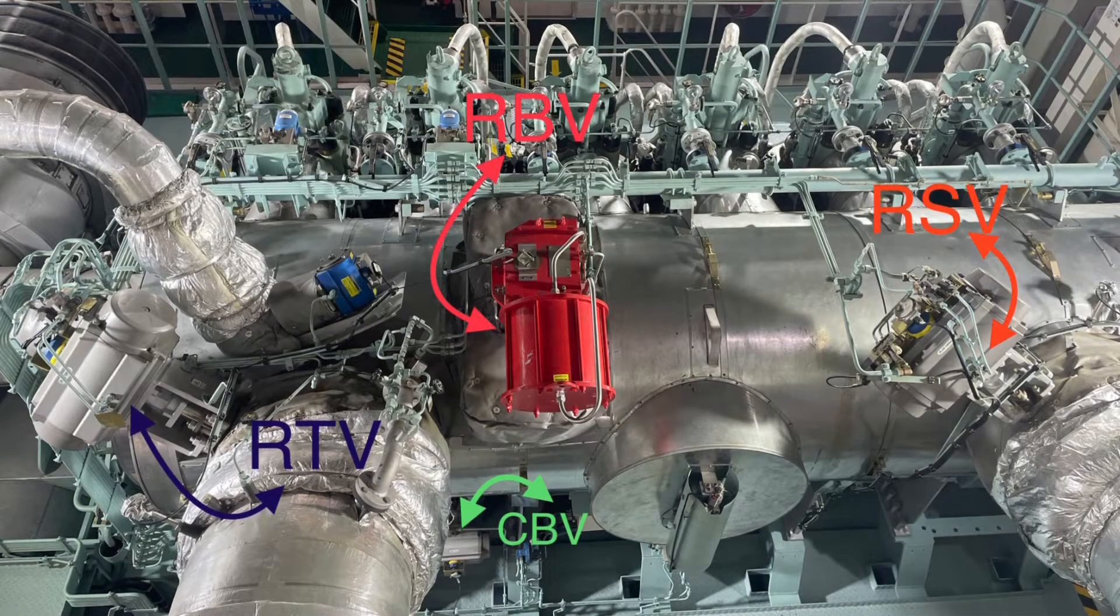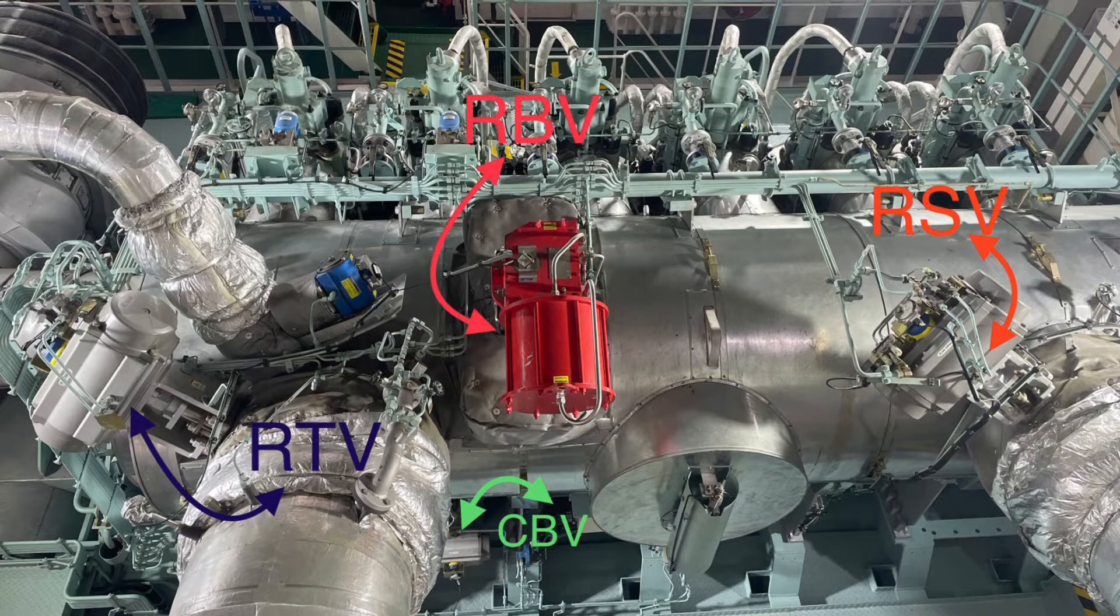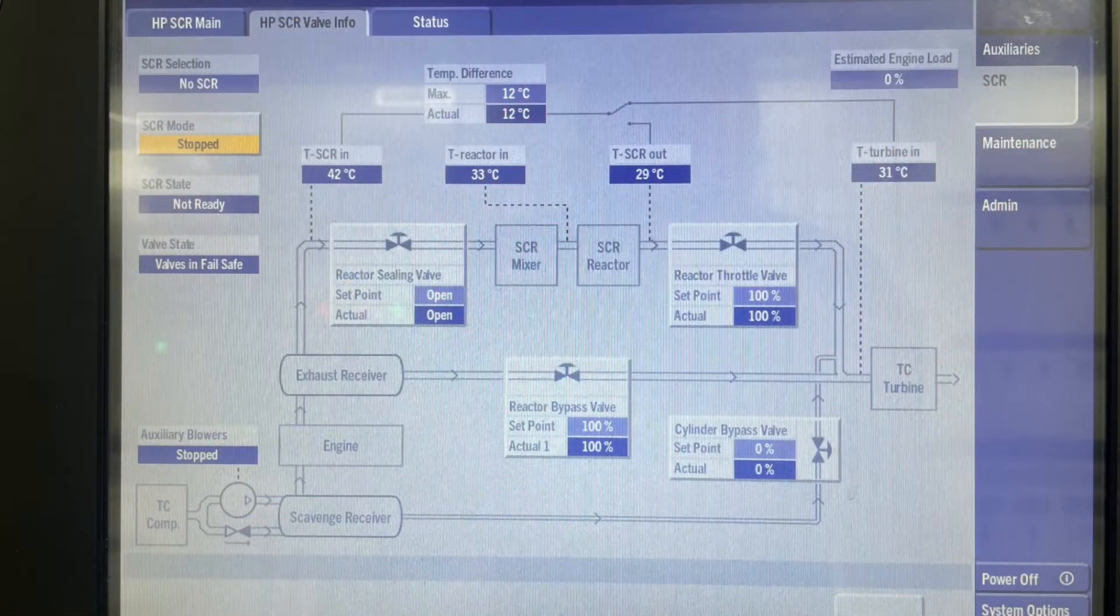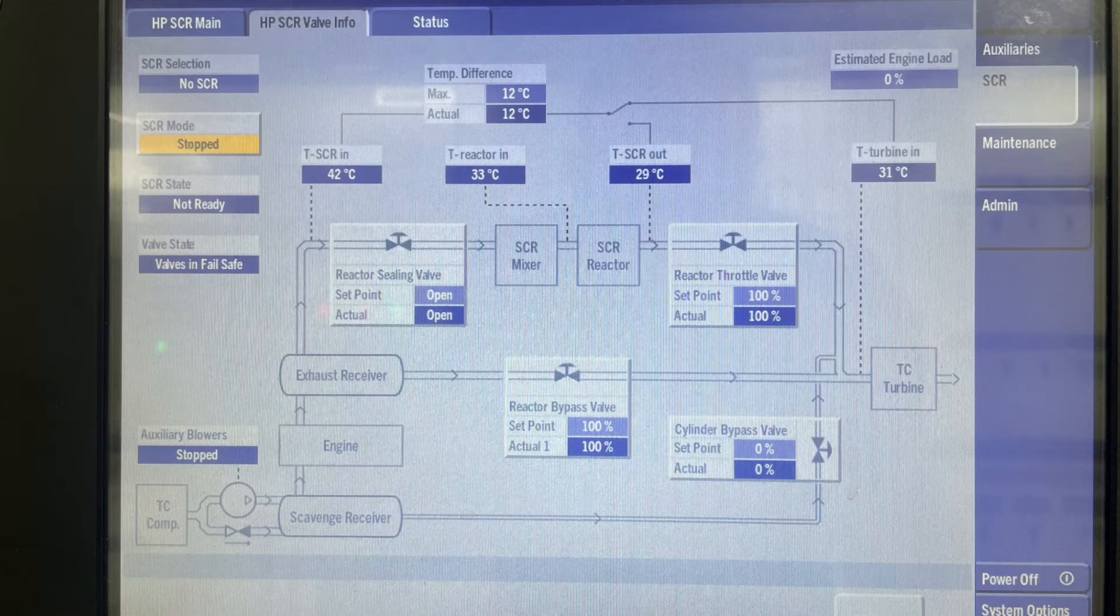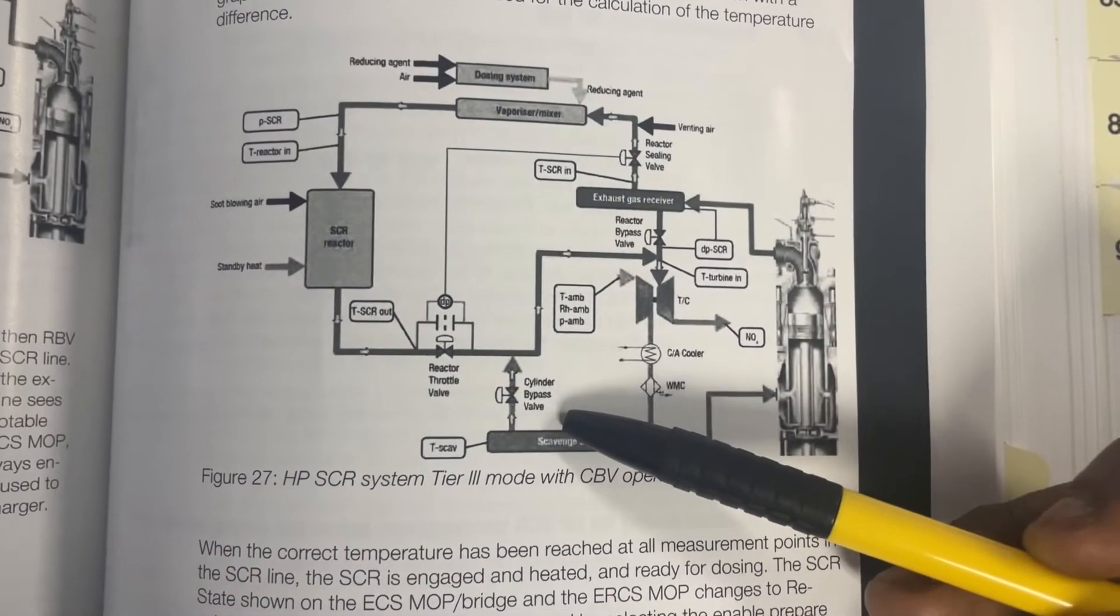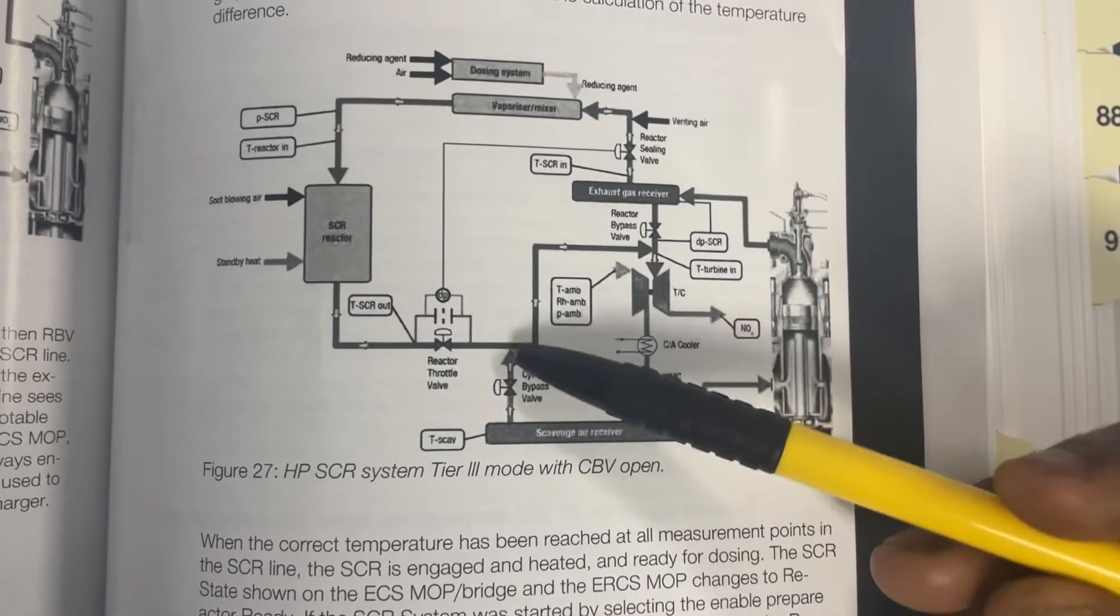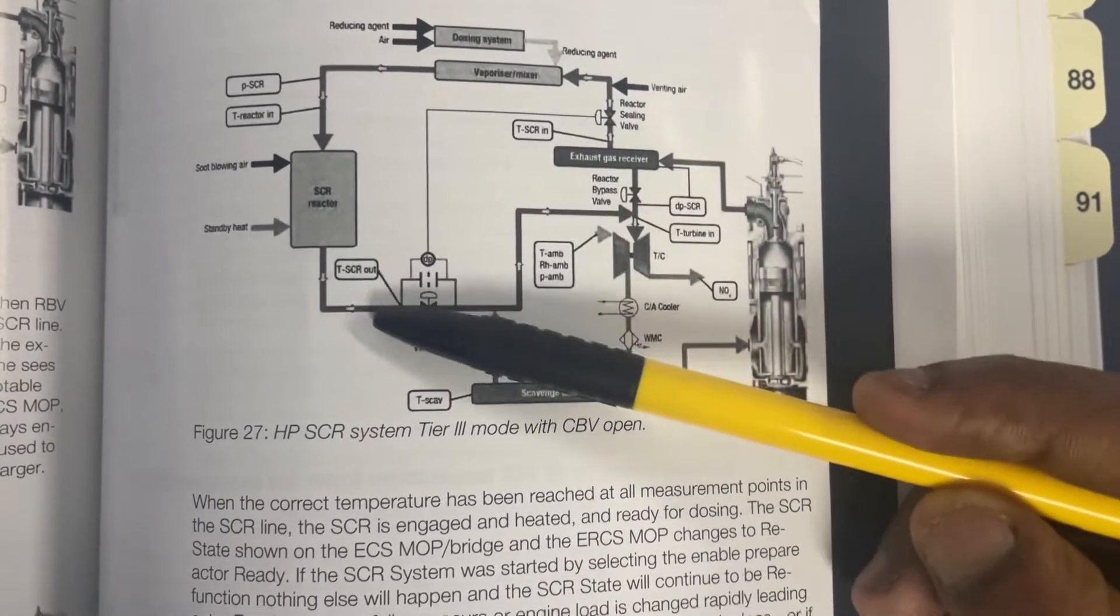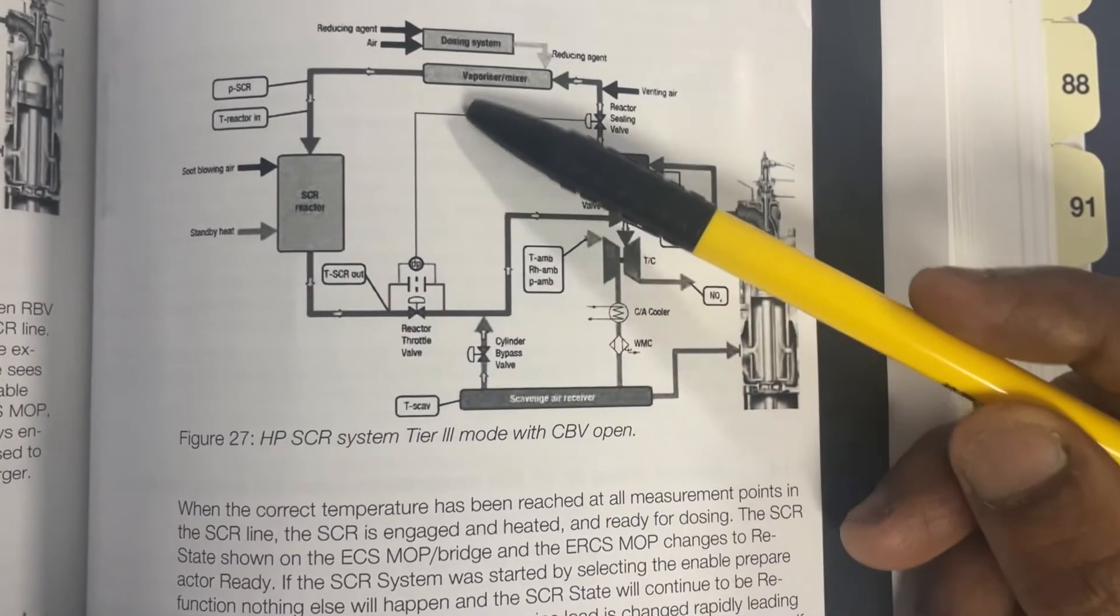The bypass valve CBV is used to increase the exhaust gas temperature at low load if needed by the reactor. The CBV valve is regulated so that the temperature in the SCR line reaches the SCR operational temperature.